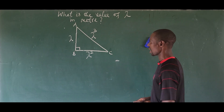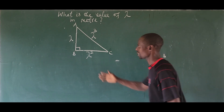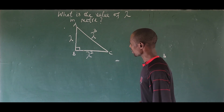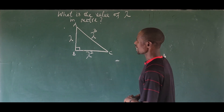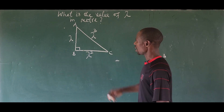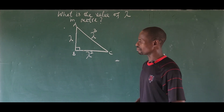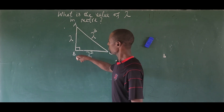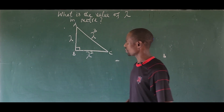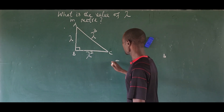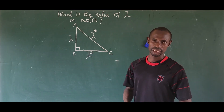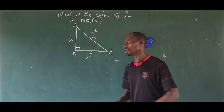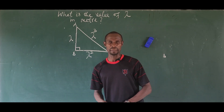Hello and welcome to today's math class. Today we have this challenge: it's a right-angle triangle and the sides are given using the symbol lambda. AB is given to be lambda, and AC is given to be lambda to the power of three.